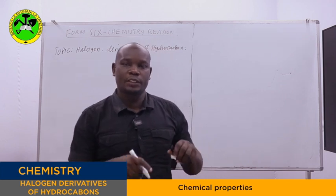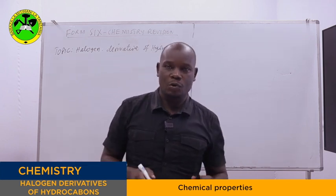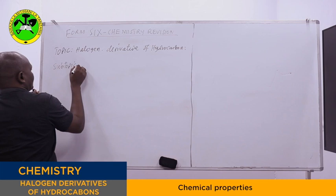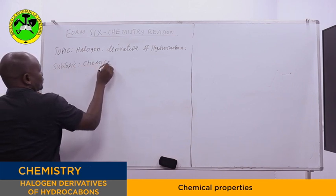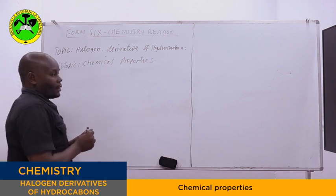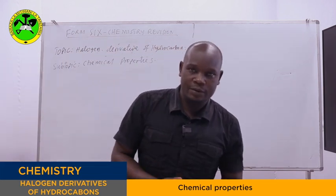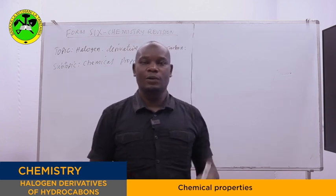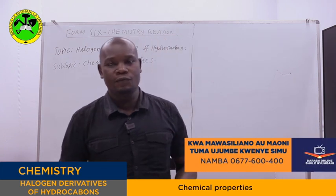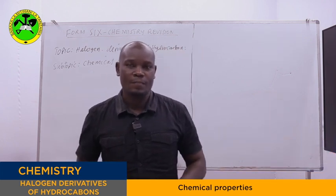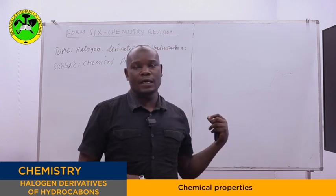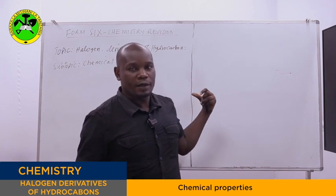And under this topic, we will stick on the sub-topic known as chemical properties. And by the end of this lesson, you will be able to describe nucleophilic substitution reaction of halogens derivatives of hydrocarbons. From there, you will have a competence in using scientific and technological skills in solving environmental problems that are happening in our normal environment.